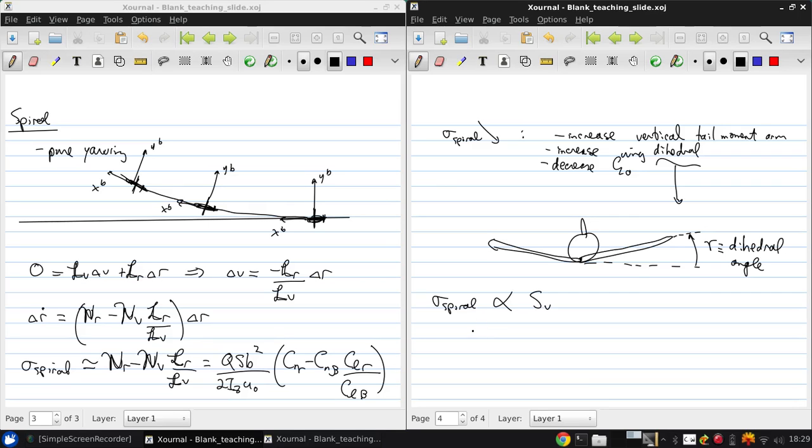We can also estimate CL-beta and CLr using lifting line theory modified to account for sideslip, dihedral, and taper. And the results of that are CL-beta is negative CL-alpha times epsilon over 6, (1 plus 2 lambda) over (1 plus lambda). Lambda is again the taper ratio.